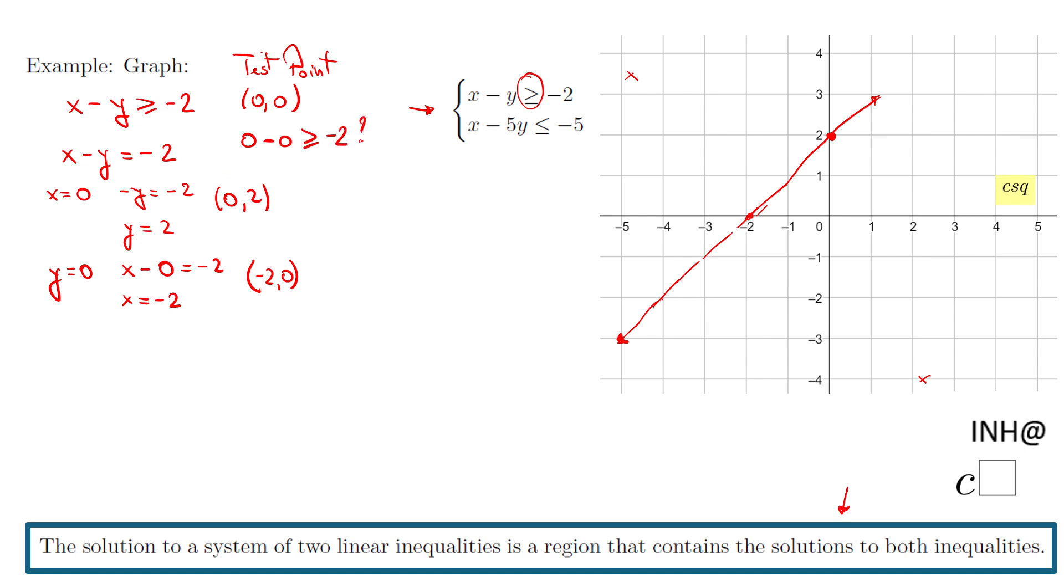Is that greater or equals negative two? That's the reason I put a question mark here. And we end up with zero greater or equals negative two, which is true. So I'm going to put a check mark. It works fine.